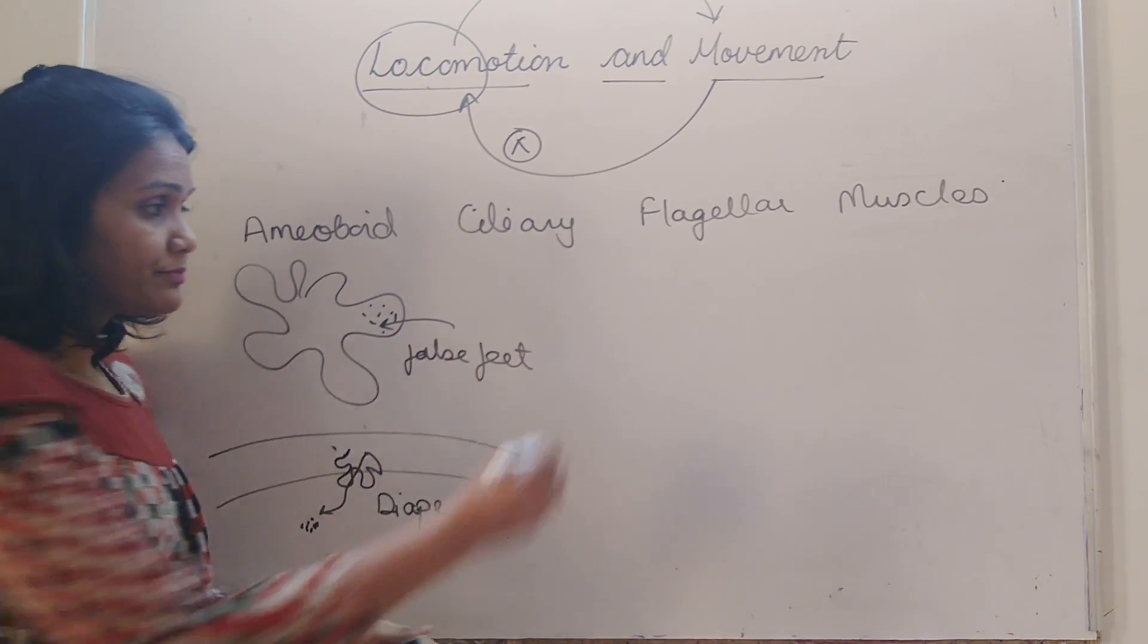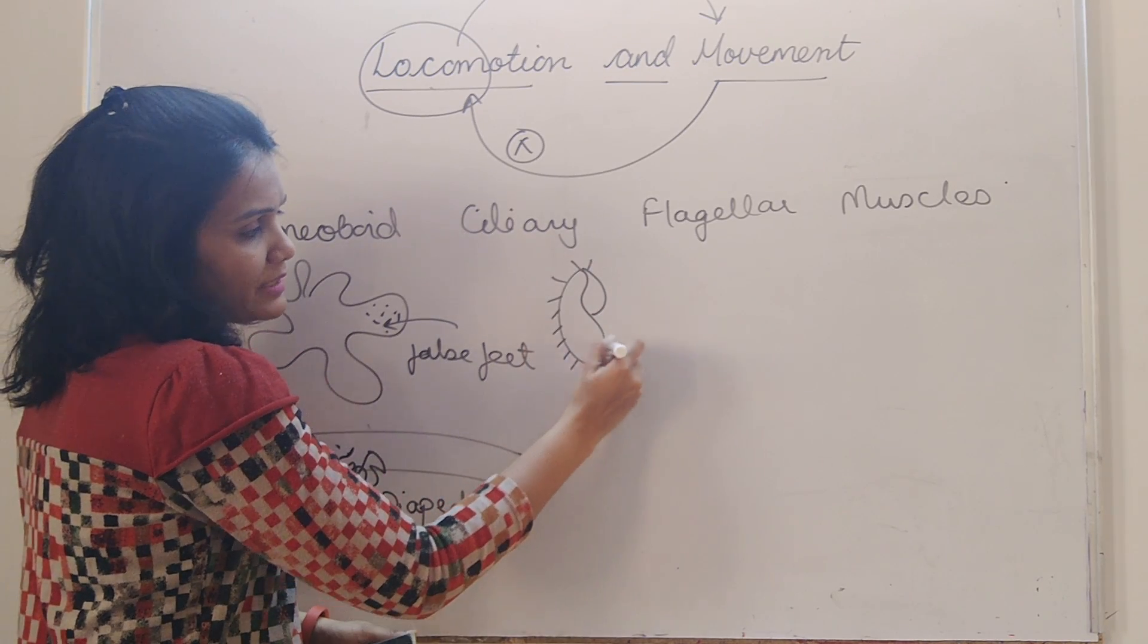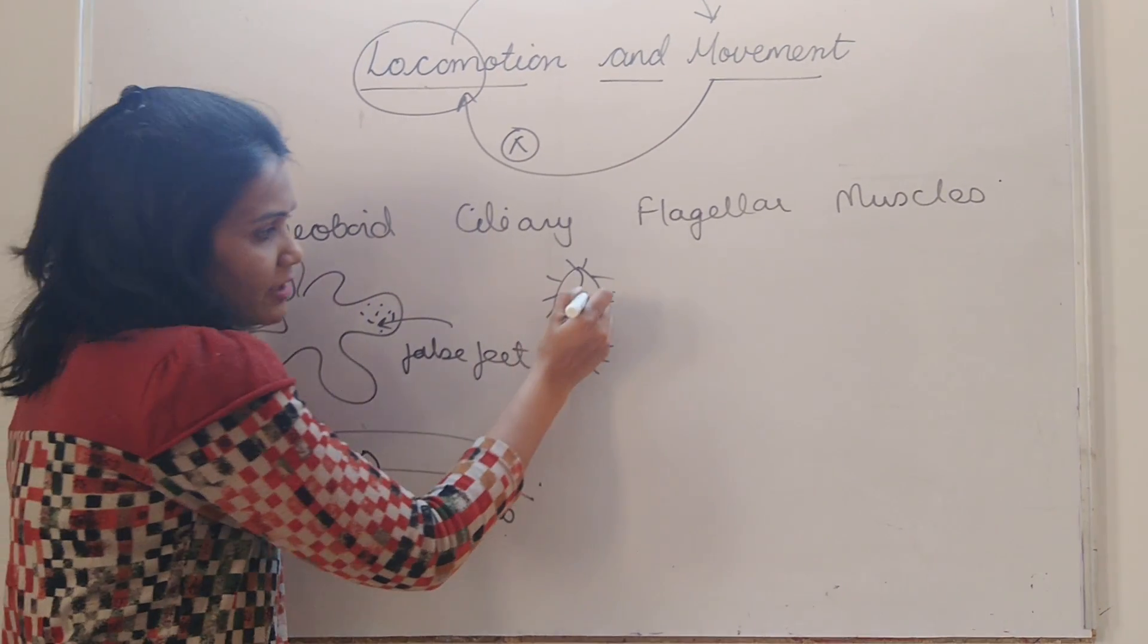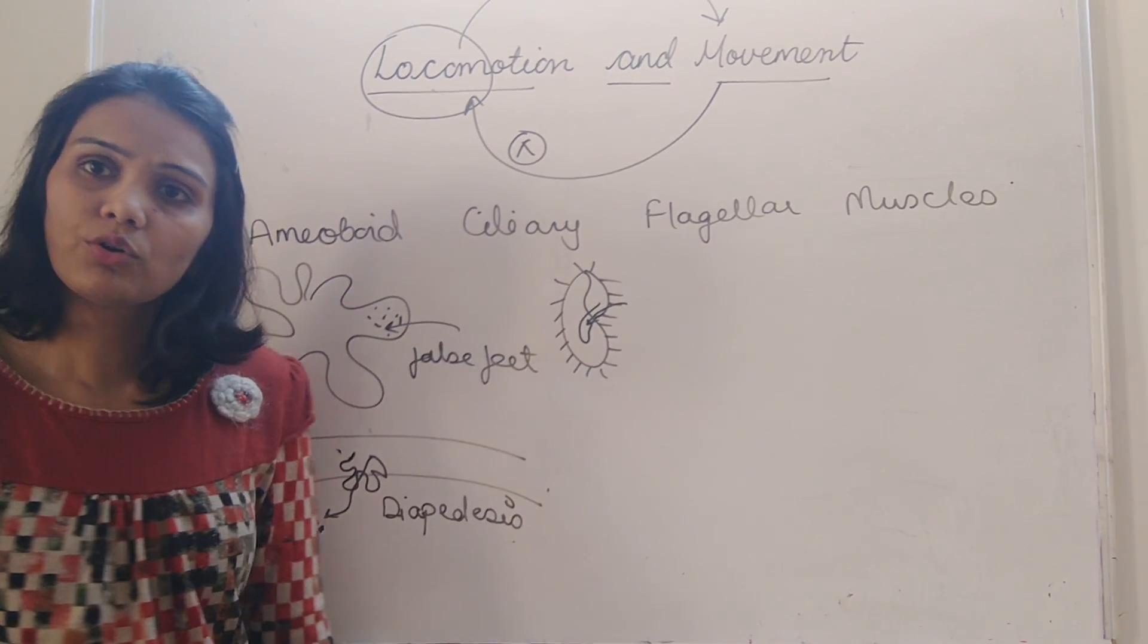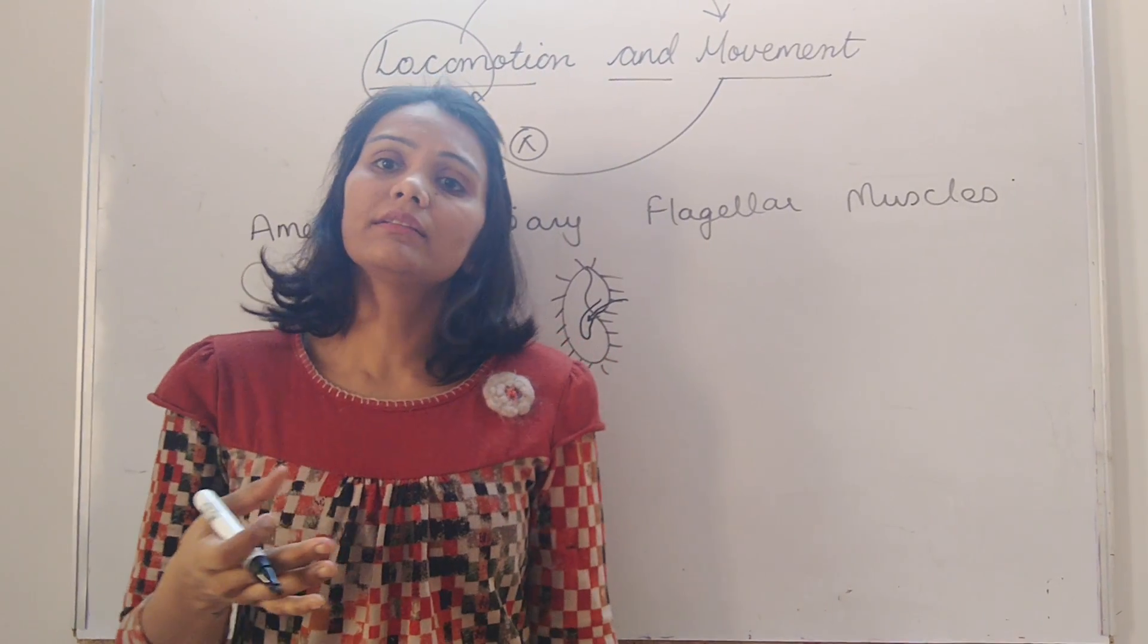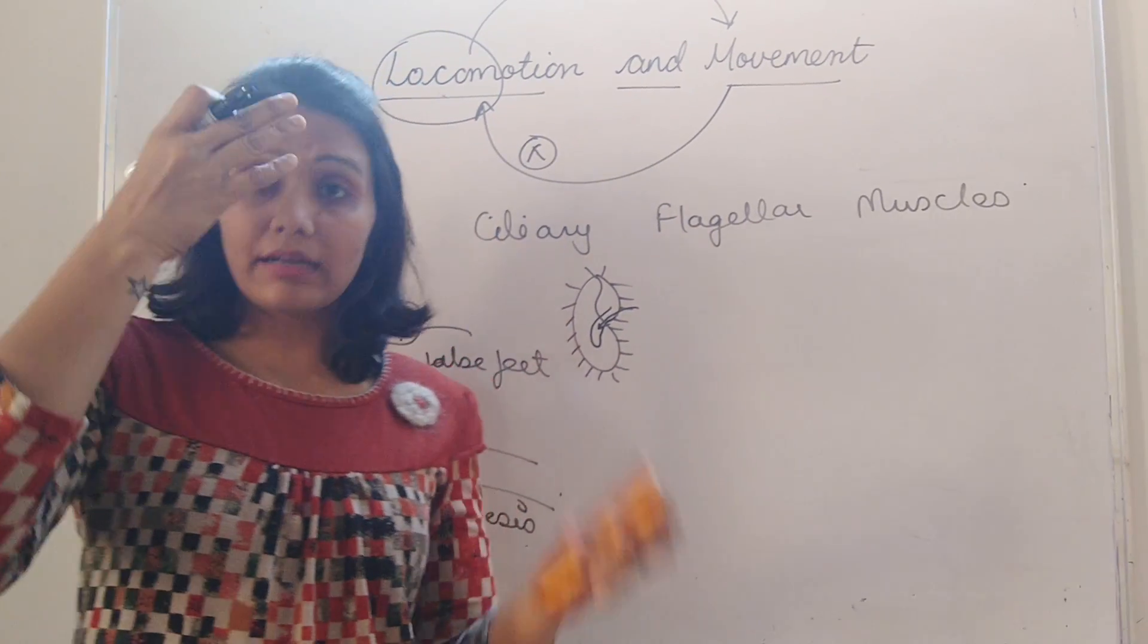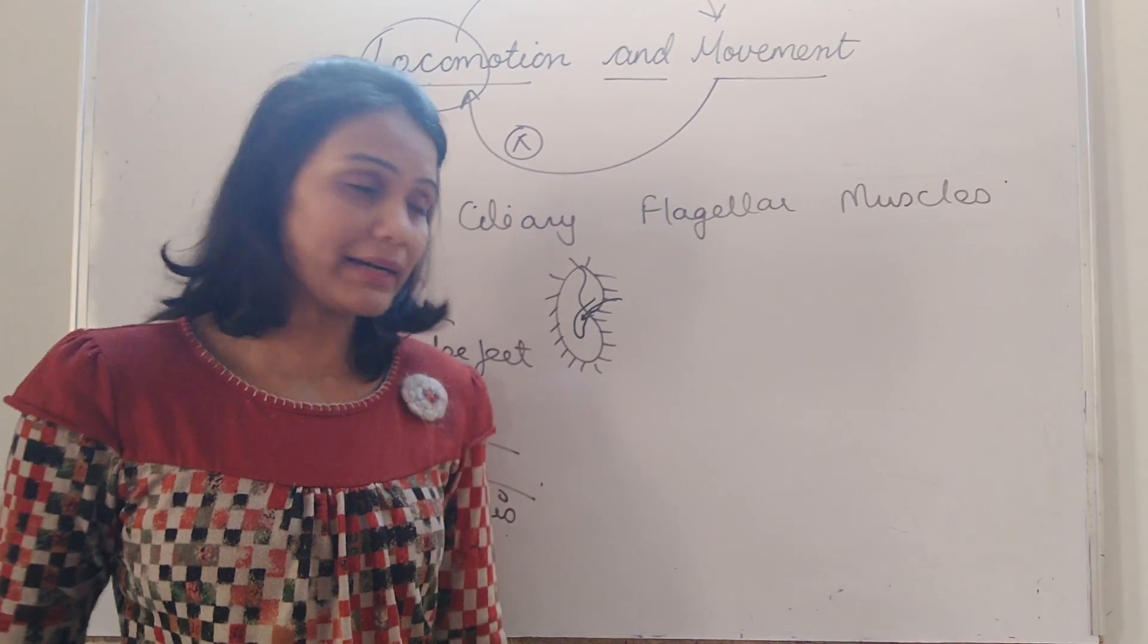Ciliary movement. This is slipper animalculum. It has contained a large number of cilia. Paramecium and the movement is because of the cilia. It also helps to capture food and direct it into the cytopharynx. The ciliary movement is also observed in our nose cells in reproductive tract. The canal is lined by lots of cilia so that we can exhale out the dust particles.